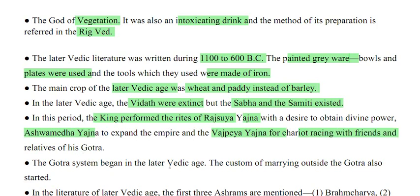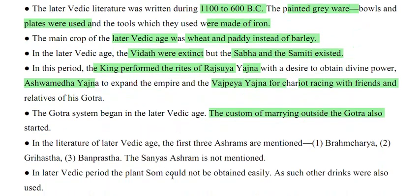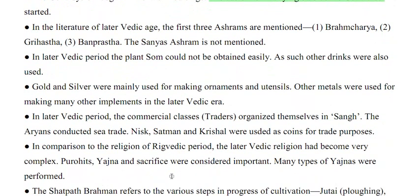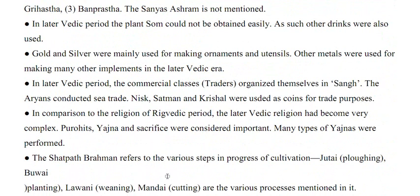The Gotra system began in the later Vedic age, and the custom of marrying outside the Gotra also started. In the literature of the later Vedic age, only the first three ashrams are mentioned: Brahmachari, Grihashtra and Vanaprastha — the Sanyas ashram is not mentioned. Gold and silver were mainly used for making ornaments and utensils; other metals were used for many other implements.